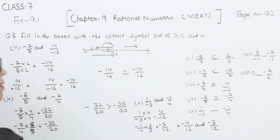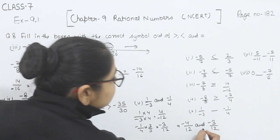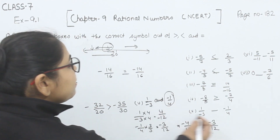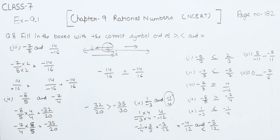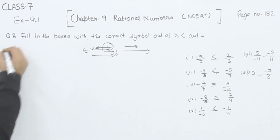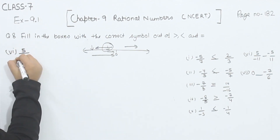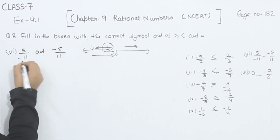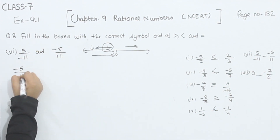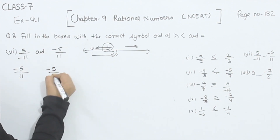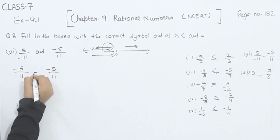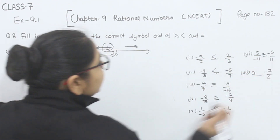In negative numbers, the smaller absolute value is the greater number. So minus 3 by 12 is the greater number, and this represents minus 1 by 4 — so minus 1 by 4 is greater. That completes part 5. Now comes part 6. In part 6, we have 5 by minus 11 and minus 5 by 11. Writing the negative in the numerator: minus 5 by 11 and minus 5 by 11. They are equal, so I put the equal sign here.